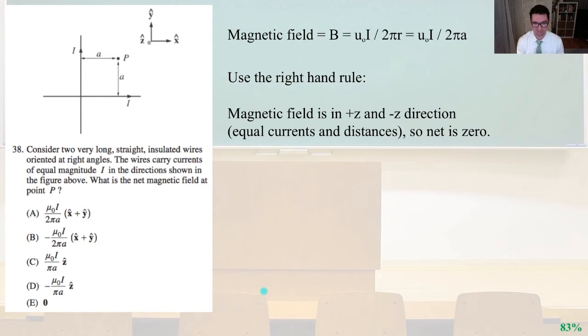So the magnetic field equals B equals magnetic constant times I divided by 2 pi R equals magnetic constant I divided by 2 pi times the area in this problem. So instead of using R, using A, A is simply the length as you can see in the problem. And again, so use the right-hand rule. The magnetic field is in the positive Z and minus Z direction from these two currents, so equal currents and distances, so the net must be zero. So that's answer E.